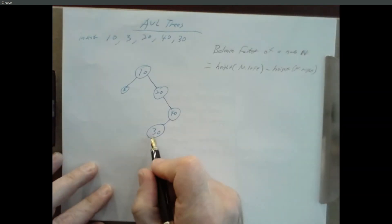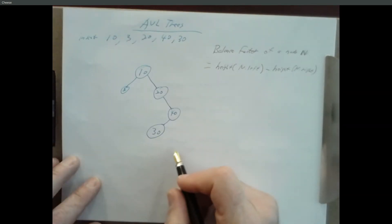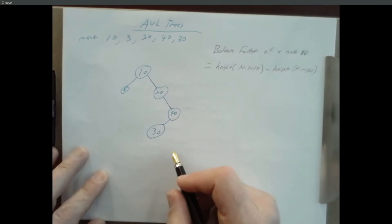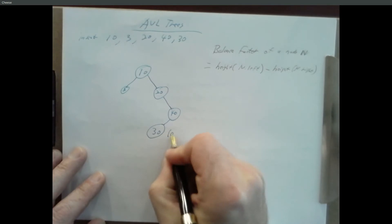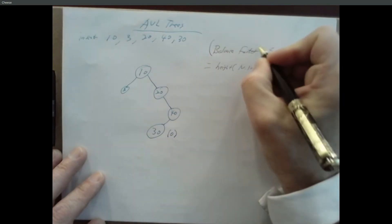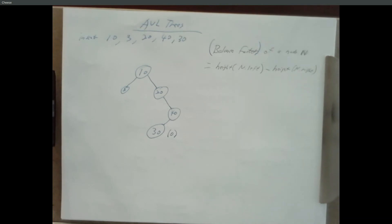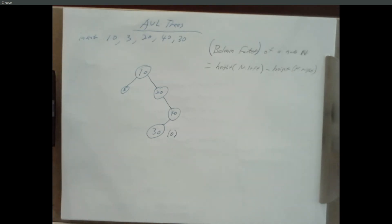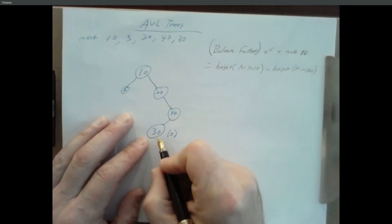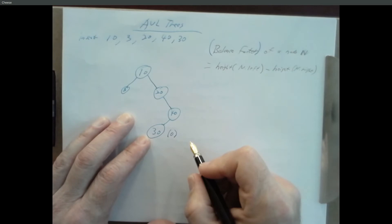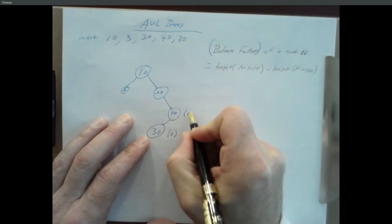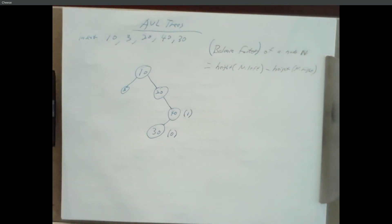We're going to define something called a balance factor. The balance factor of a node N equals the height of N's left subtree minus the height of N's right subtree. Every node has a balance factor. For example, node 30: left subtree is null (height -1), right subtree is null (height -1), so -1 minus -1 equals 0. Node 40: left subtree height 0, right subtree null height -1, so 0 minus -1 equals 1, meaning the left tree is 1 bigger than the right.